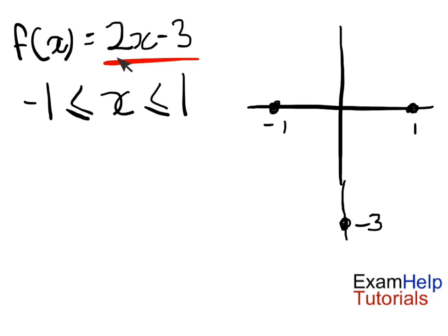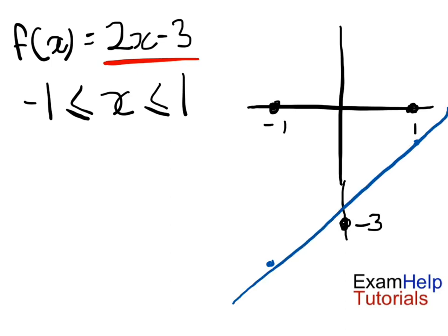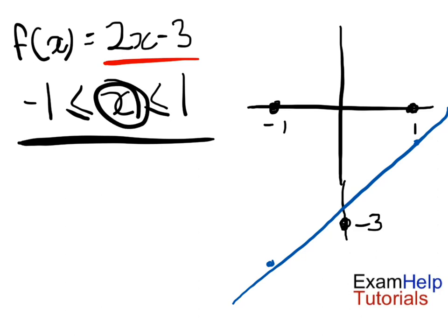We know it crosses at minus 3. If we put minus 1 into our function: 2 times minus 1 is minus 2, minus 3 gives minus 5. So we have the point (minus 1, minus 5). Then if we put 1 in: 2 times 1 is 2, minus 3 gives minus 1. So we get the point (1, minus 1). Our domain is any x value between minus 1 and 1.